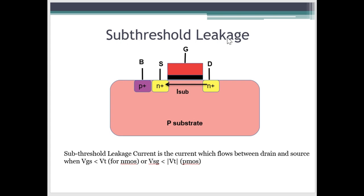So what is sub-threshold leakage? As the name suggests, something which happens below threshold. Let's understand this with an example. Let's take an NMOS. We know that NMOS is on when VGS is greater than VT. And when VGS drops below the threshold voltage, when VGS is less than VT, NMOS is supposed to be off, right?